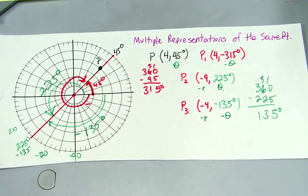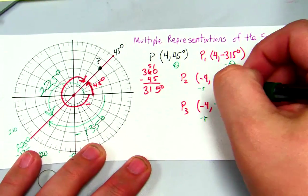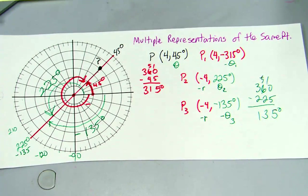And we just use thetas as, you could call that theta 1, theta 2, theta 3. And we'll be able to find four different representations of the point. Hopefully that makes sense. If not, come and see me.